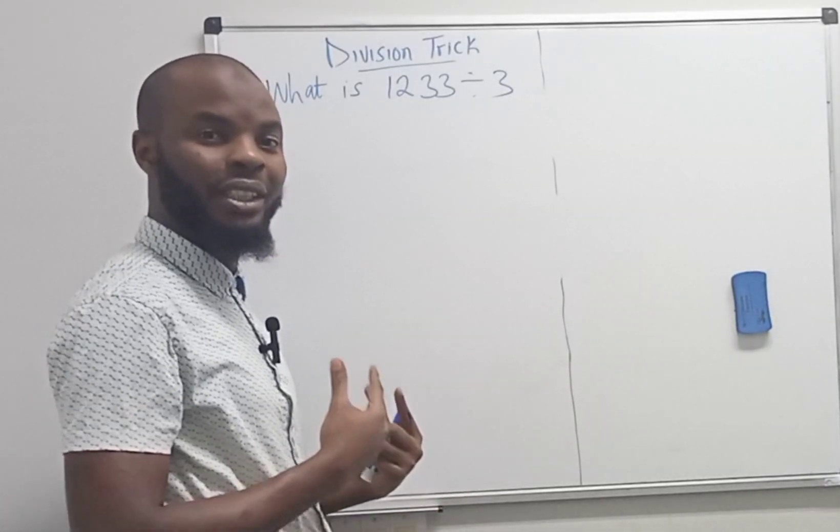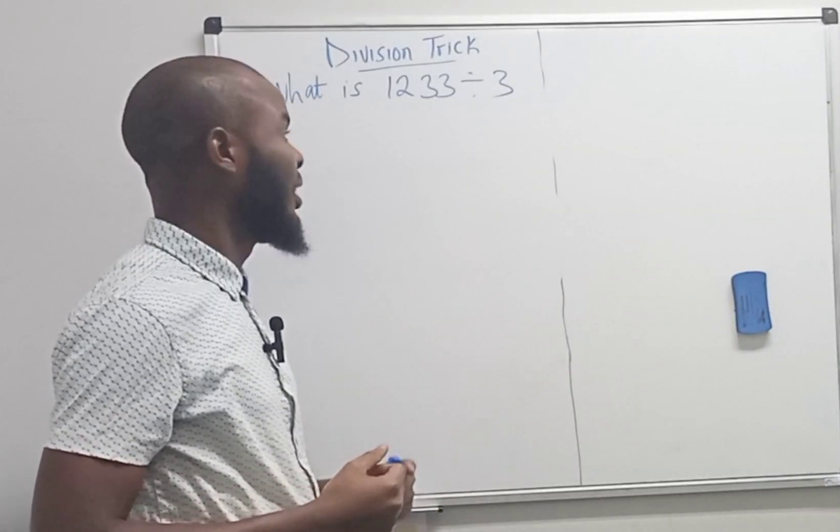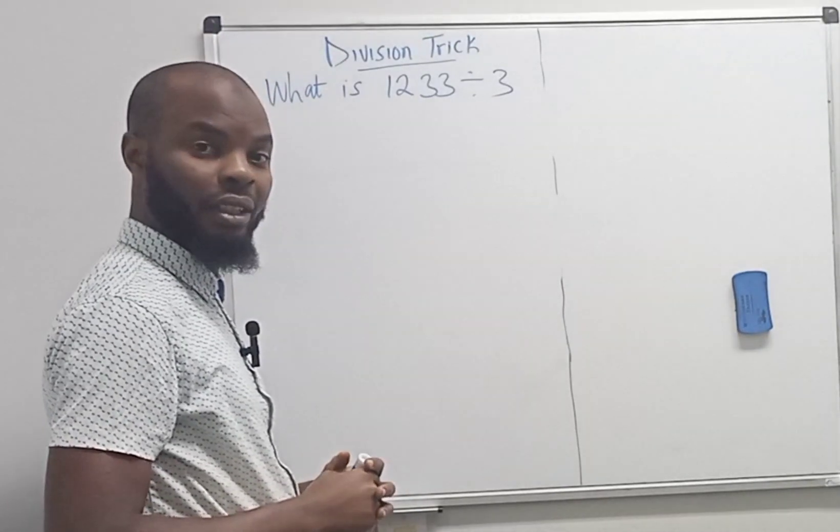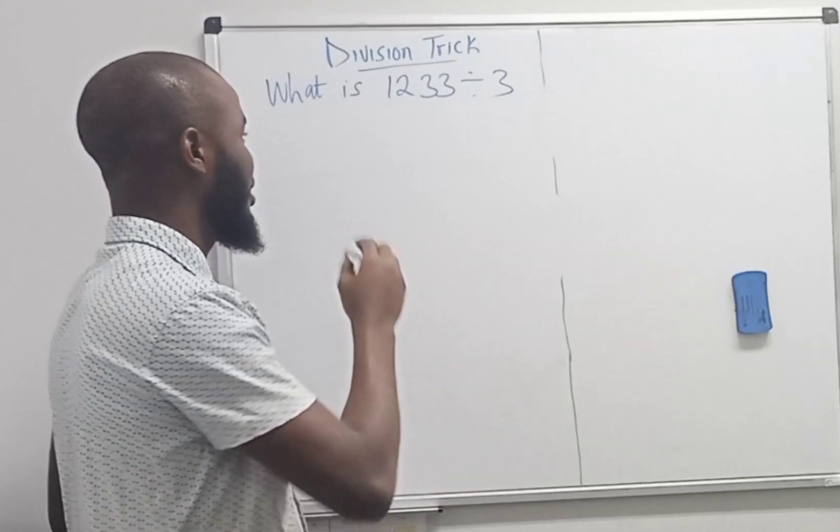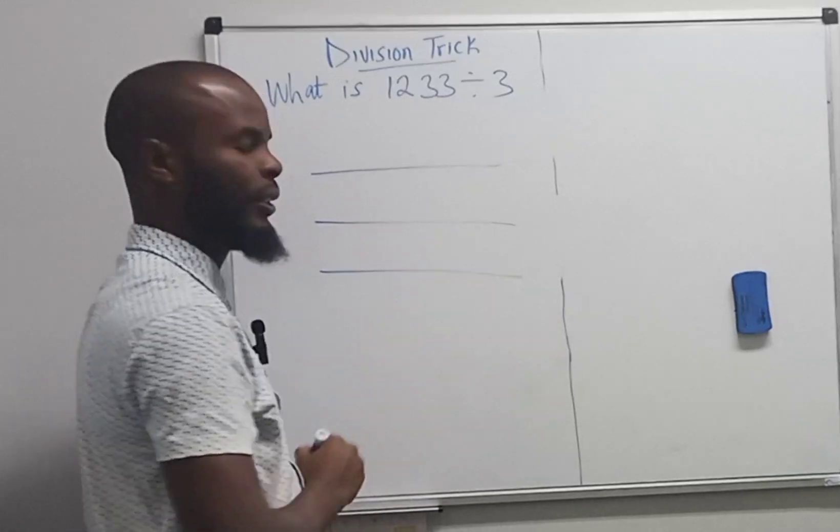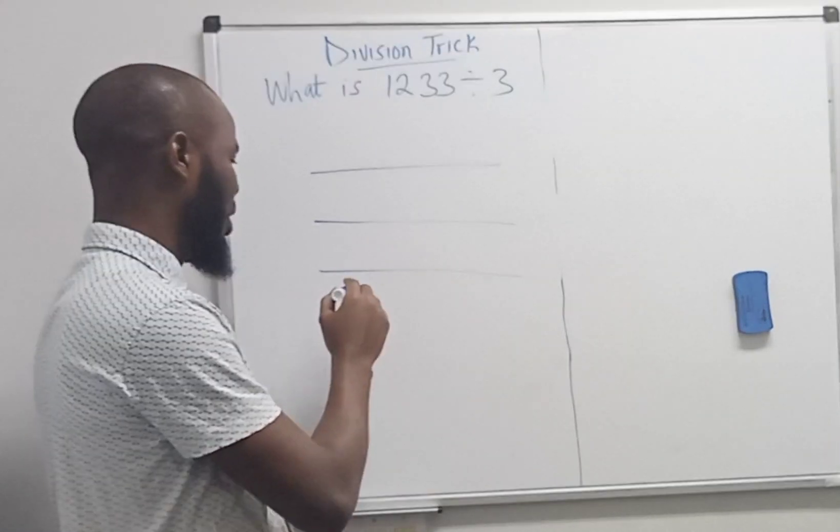Hello viewers, I'd like to teach you this division trick. Now we have 1233 divided by 3. Let's have three lines, one, two, three, and we have what we have.